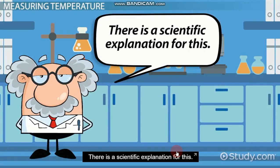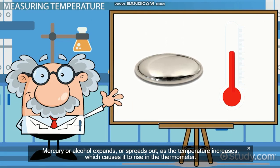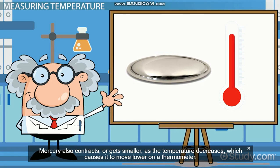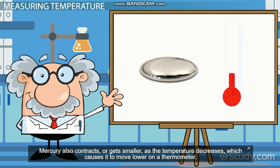There is a scientific explanation for this. Mercury or alcohol expands, or spreads out, as the temperature increases, which causes it to rise in the thermometer. Mercury also contracts, or gets smaller, as the temperature decreases, which causes it to move lower on the thermometer.